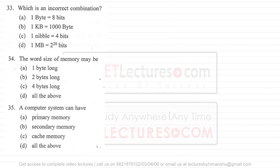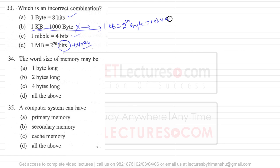Question 33 asks which is an incorrect combination. There are two wrong entries: 1 KB is equivalent to 2 raised to power 10 bytes, which is 1024 bytes — so writing it differently is wrong. Also, 1 MB uses a capital B meaning bytes, not bits, so writing it as bits is wrong. The other two options are correct.